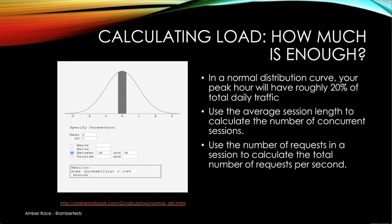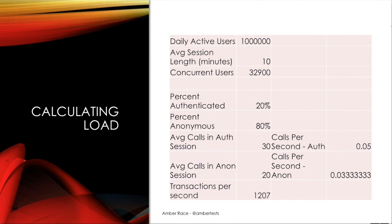Using a normal distribution curve, the peak hour will have roughly 20% of the daily traffic. Using that 20% and knowing the average session length, you can calculate how many sessions are happening at the same time. When you know how many concurrent sessions there are and the kinds of requests in a session, you can calculate requests per second. For example, with a daily goal of one million active users and an average session length of 10 minutes, the peak would be 32,900 concurrent users — which works out to about 1,207 requests per second.